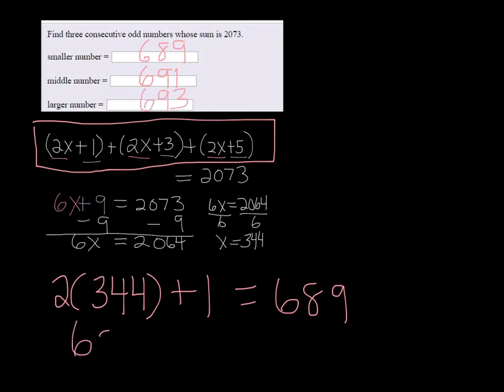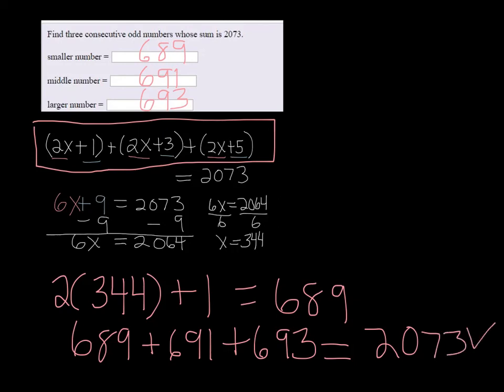So 689 plus 691 plus 693 should add up to 2073. So let's try it. Add them all up in the calculator, and it does. It adds up to 2073. But that's your check.